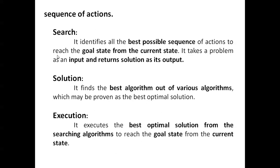Sequence of actions: in the action state, there are available possible algorithms that we have to search. That is called the sequence of action — we have to identify the best possible sequence. This is a sequence of search. Solution: we find the solution where, out of various algorithms, we identify which one provides the best optimal solution.